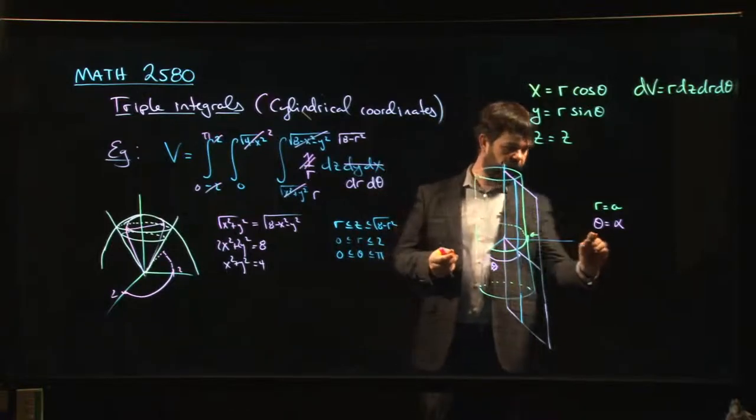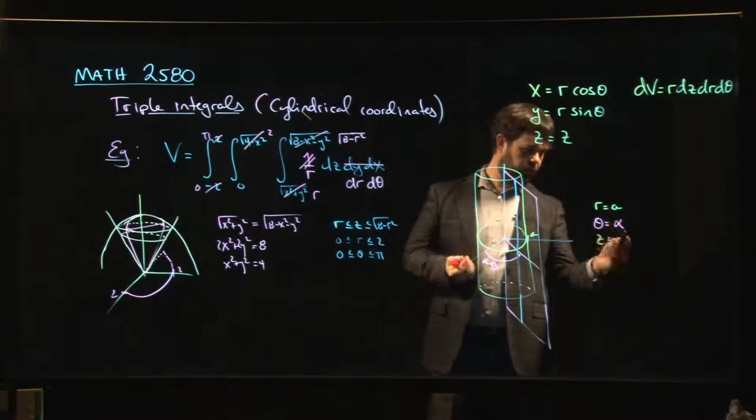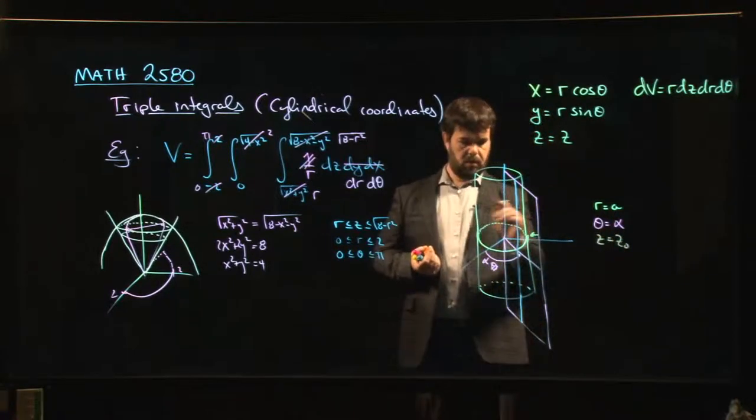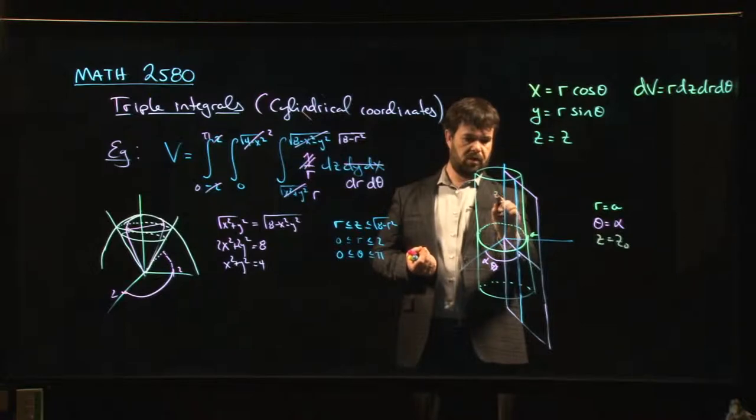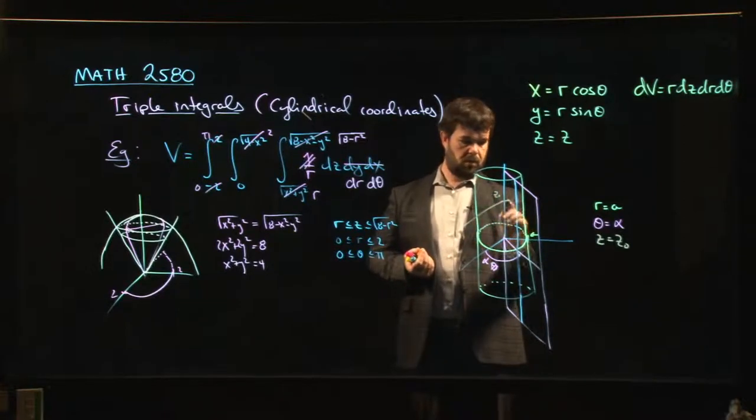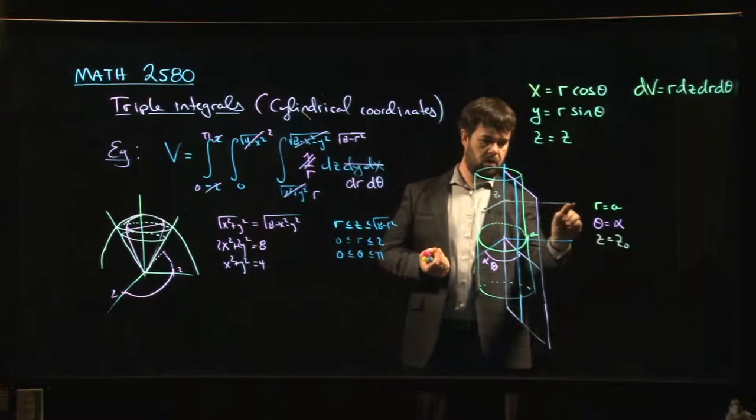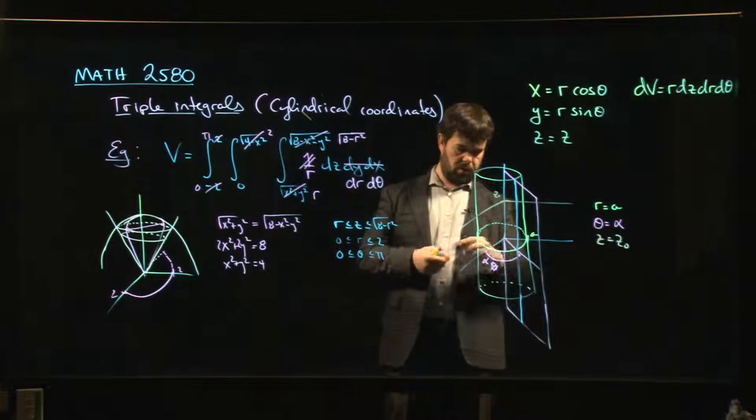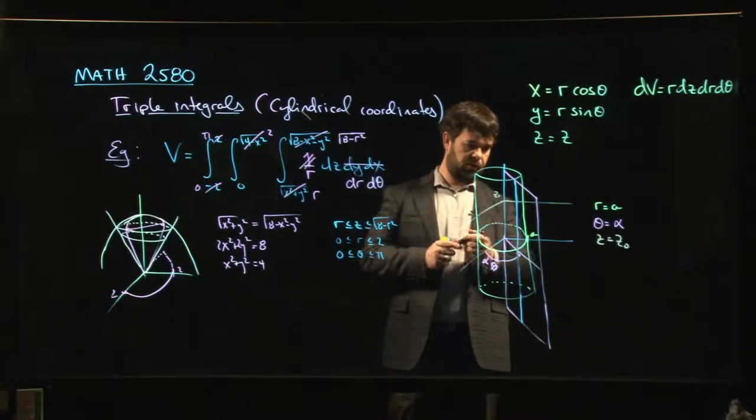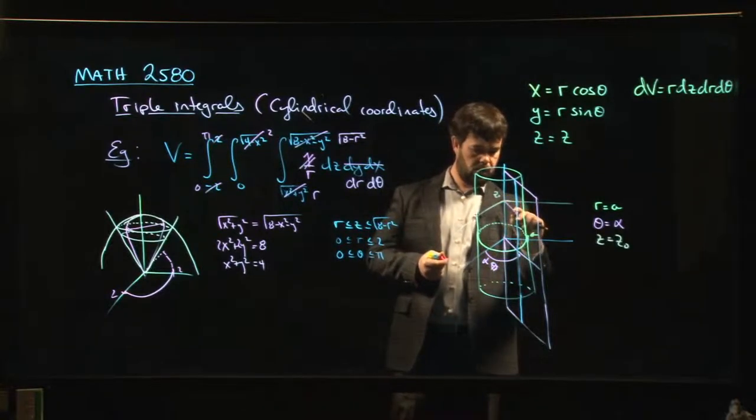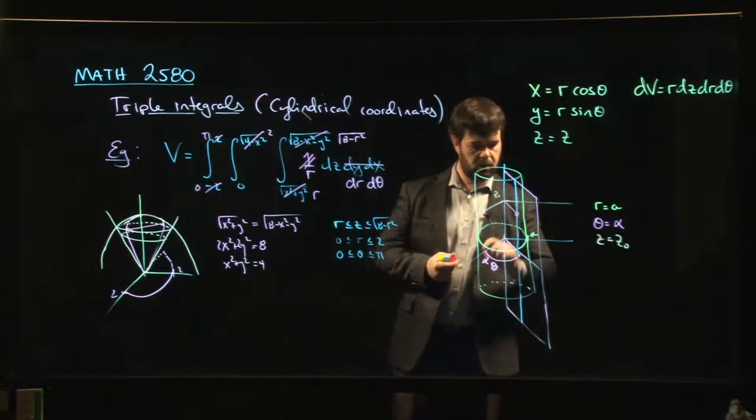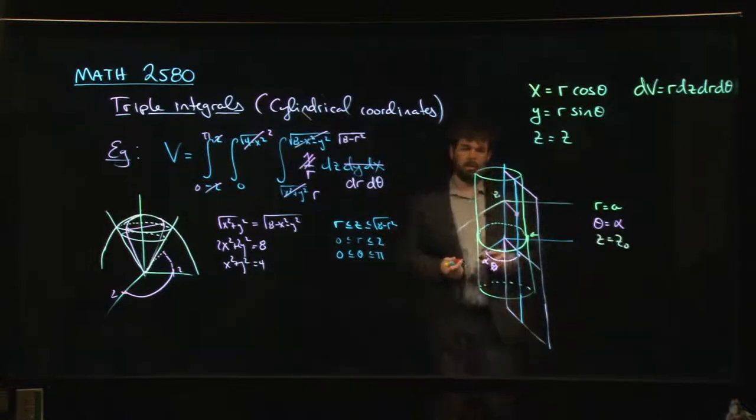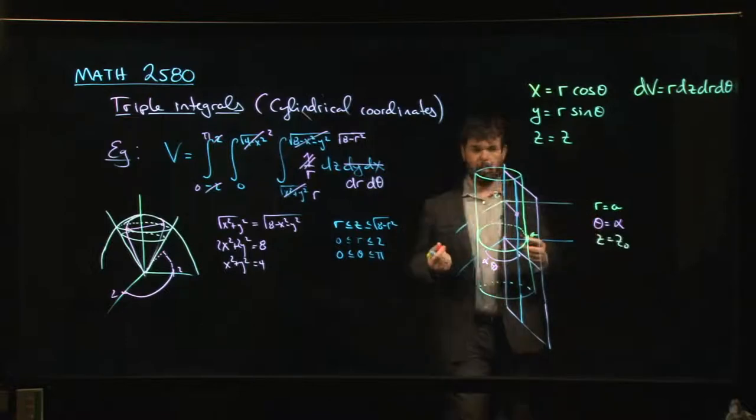So if I say z equals, I don't know, say z naught, choose that point z naught. Well, I know that that's just a plane parallel to the xy plane. And if I kind of go out along this, you know, I go at this angle theta, that tells me where I am. So now I've located my point.